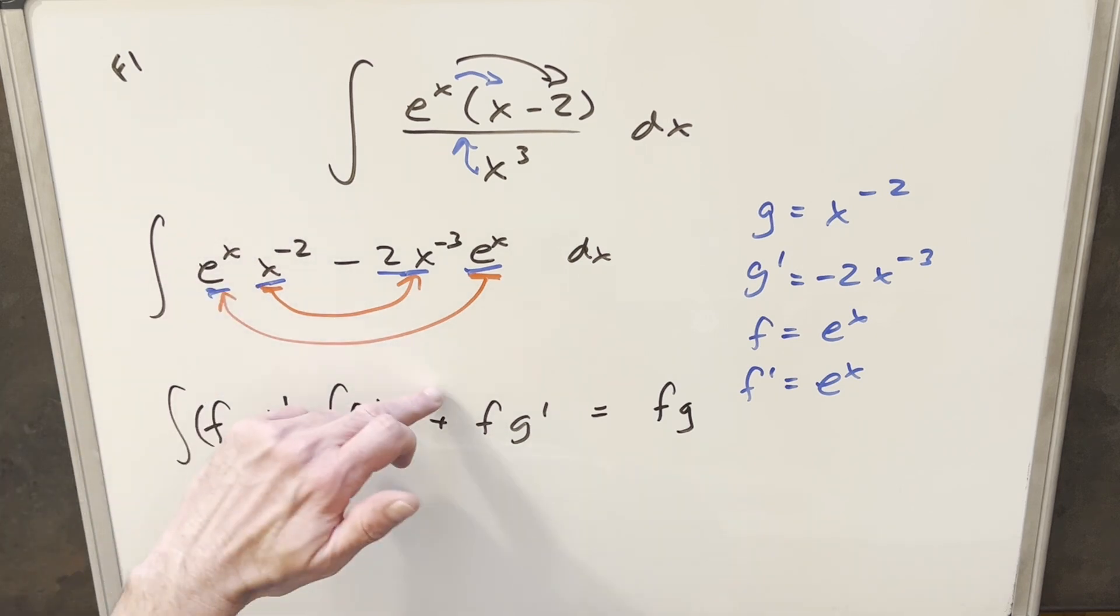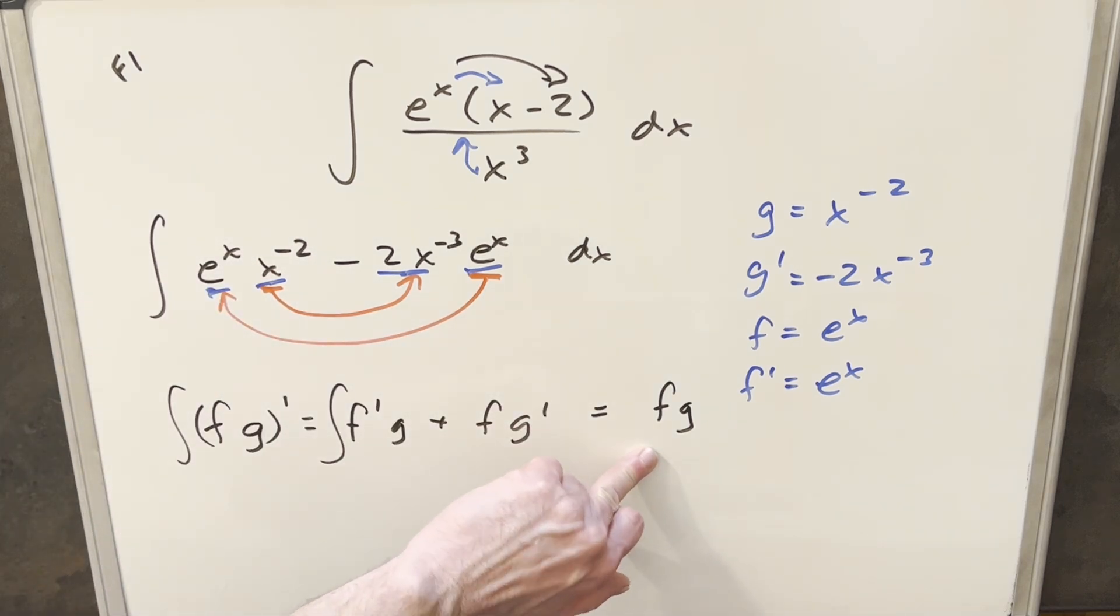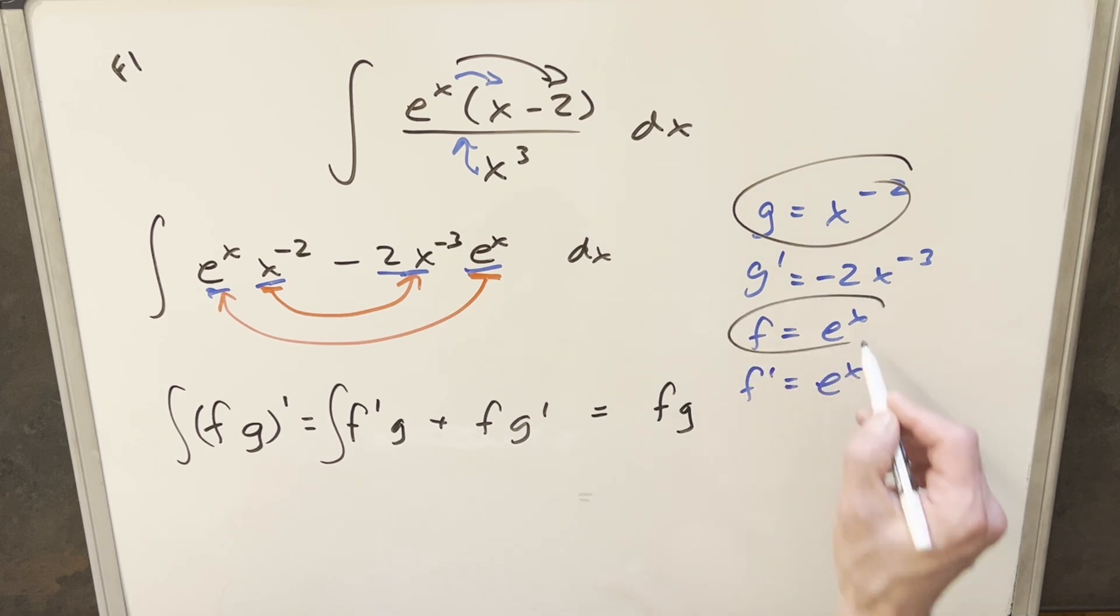So we have our integral in exactly this form here, so we can go to our solution, f times g. We have that just right here. So for our solution, this is just going to be e^x times x^(-2). I'm going to write that in the denominator as over x squared plus C, and that's it.